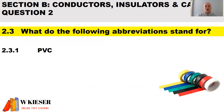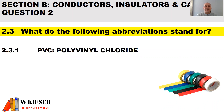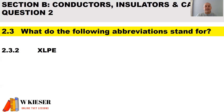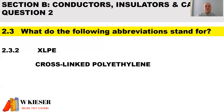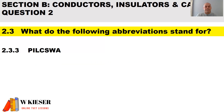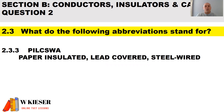In part three, what do the following abbreviations stand for? PVC stands for polyvinyl chloride. XLPE stands for cross-linked polyethylene. PILTSWA stands for paper insulated, lead covered steel-wired armoured cable.